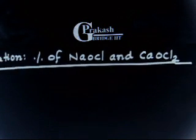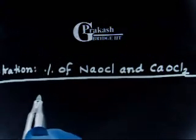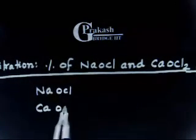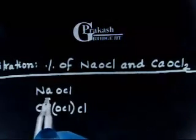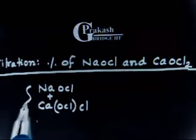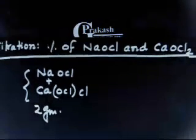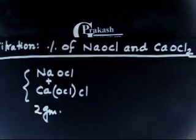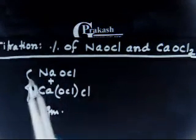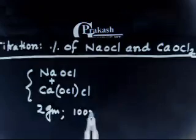Let us discuss this problem. We have a 2g sample of NaCl and CaOCl₂ — that is basically bleaching powder. This 2g mixture is dissolved in water to prepare a 100ml solution.